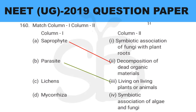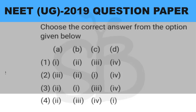Option C: lichens. Lichens are the symbiotic association between algae and fungi — that matches option 4, symbiotic association of algae and fungi. Option D: mycorrhizae. Mycorrhizae — 'myco' is related to fungus and 'rhizae' related to root — matches option 1, symbiotic association of fungi with plant roots. So the correct answer is option 4: A2, B3, C4, and D1.